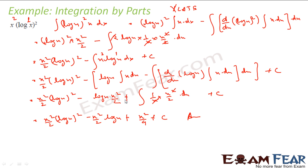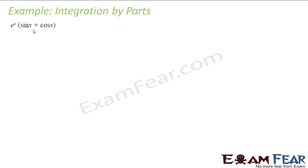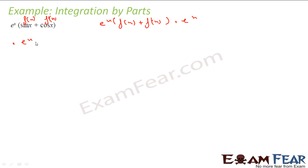So it was not that difficult. I had a product of two functions, I knew the ILATE step, I took log as the first function and solved it. Next example: ∫eˣ(sin x + cos x) dx. I know the formula that ∫eˣ[f(x) + f'(x)] dx = eˣ·f(x) + C. If I take f(x) = sin x, then f'(x) = cos x. So the answer is eˣ·sin x + C.